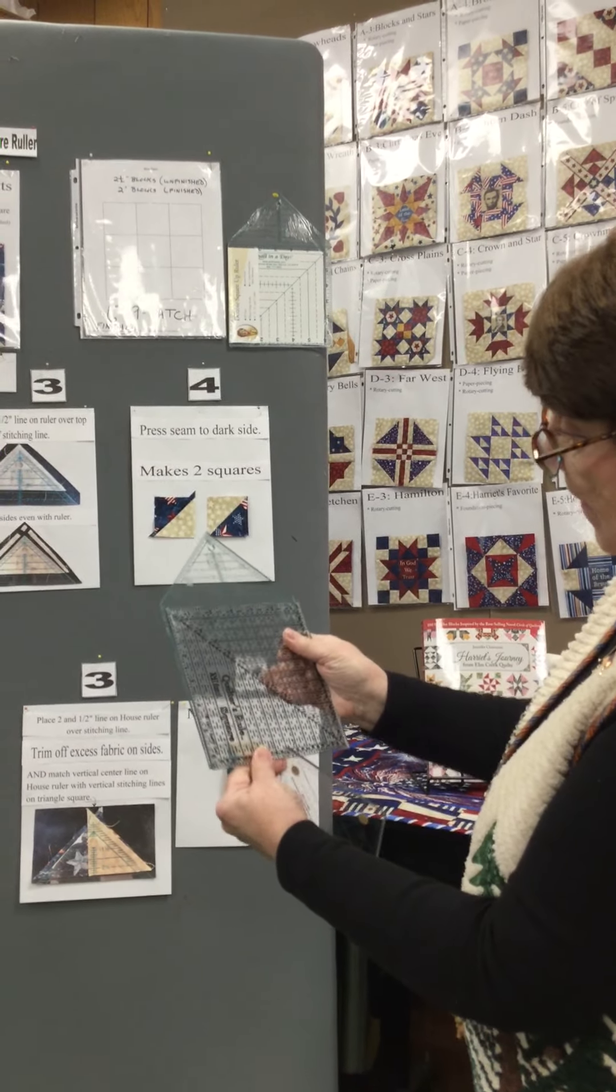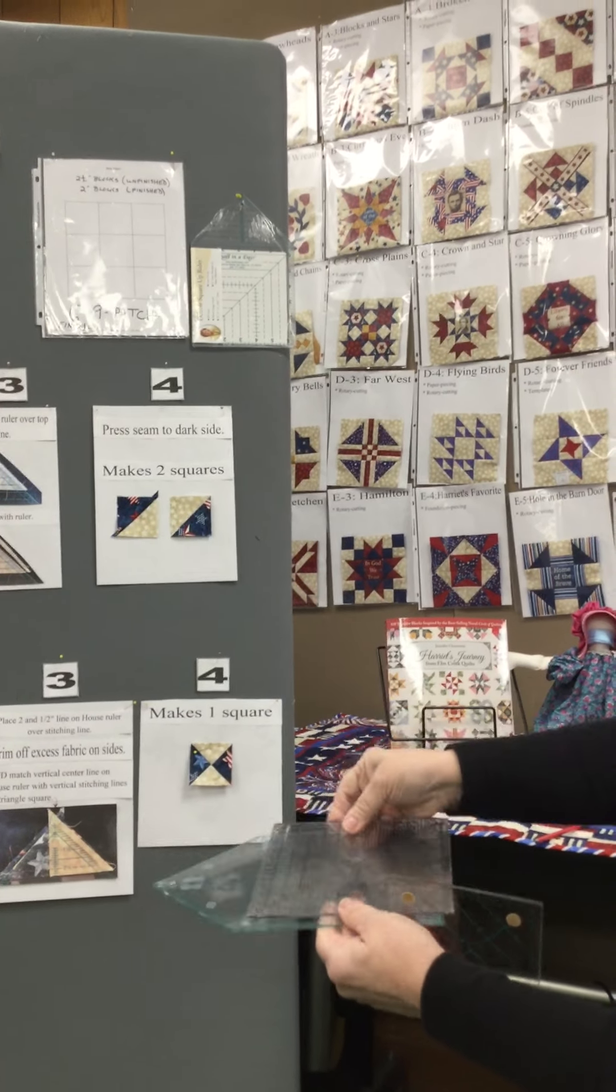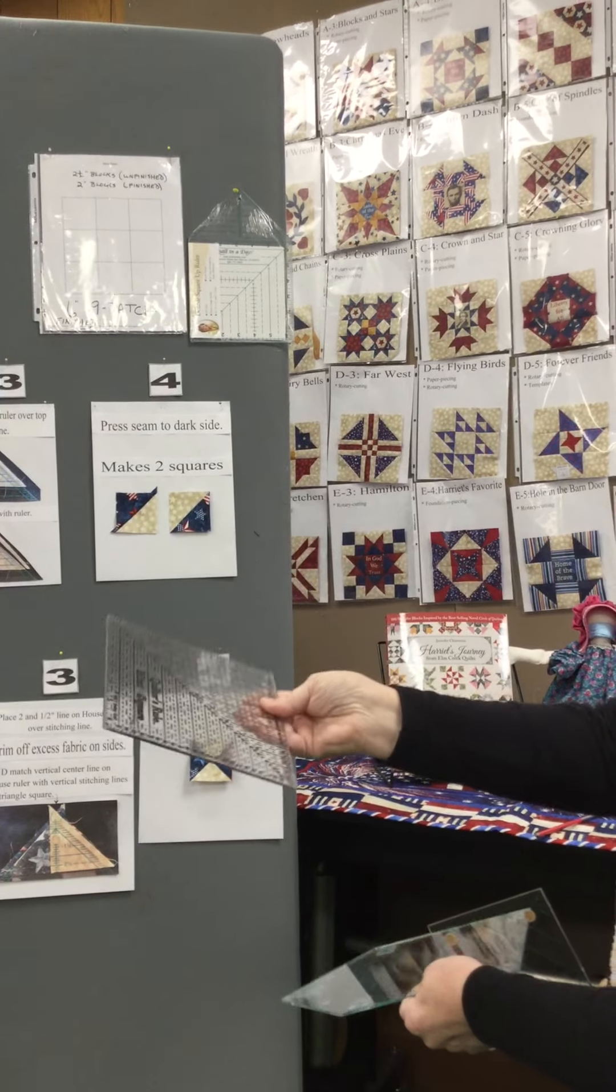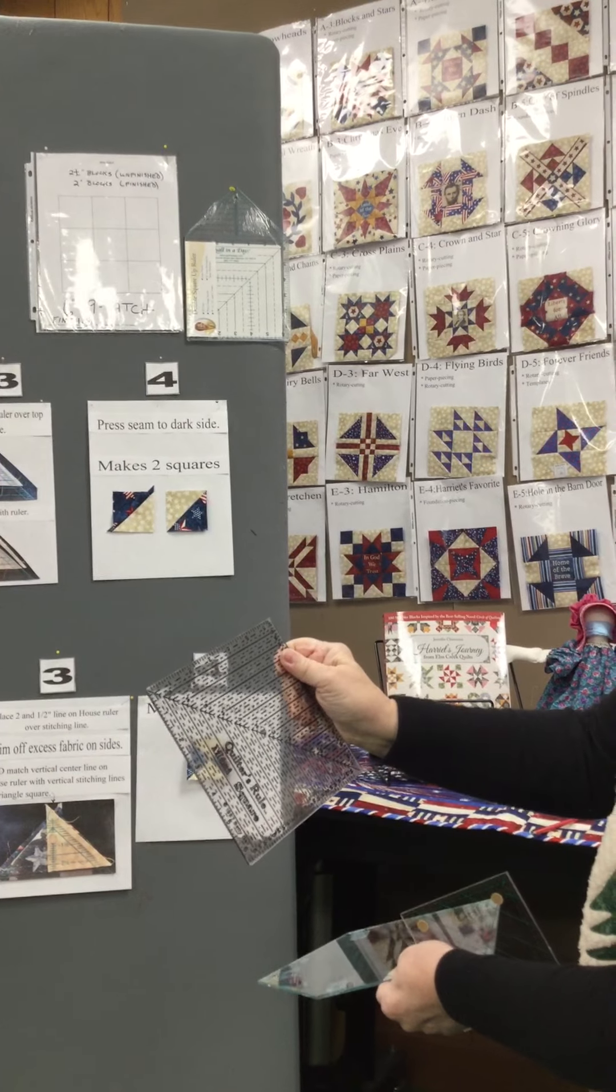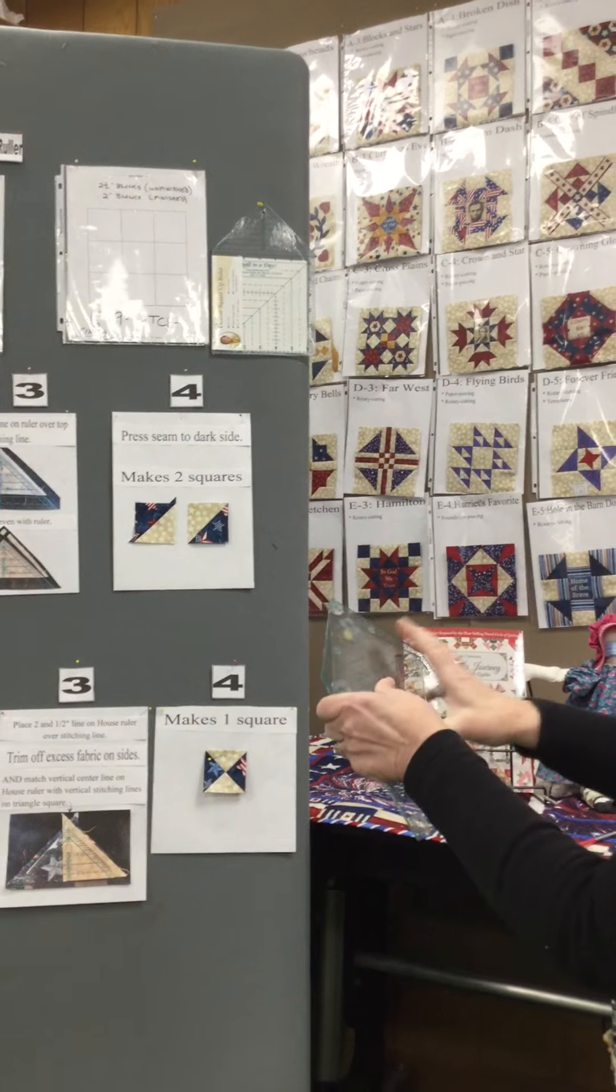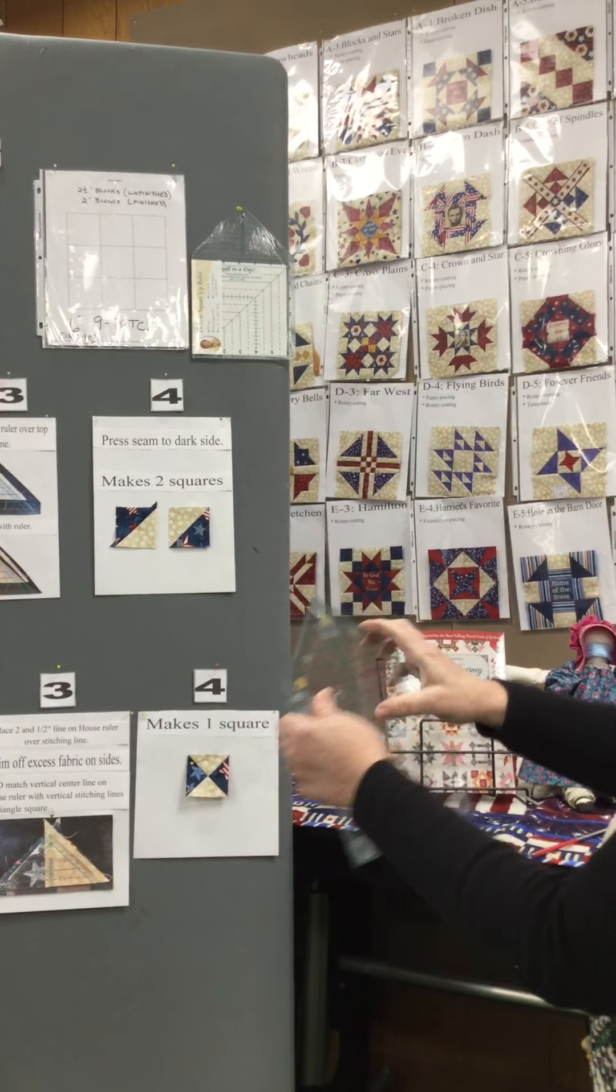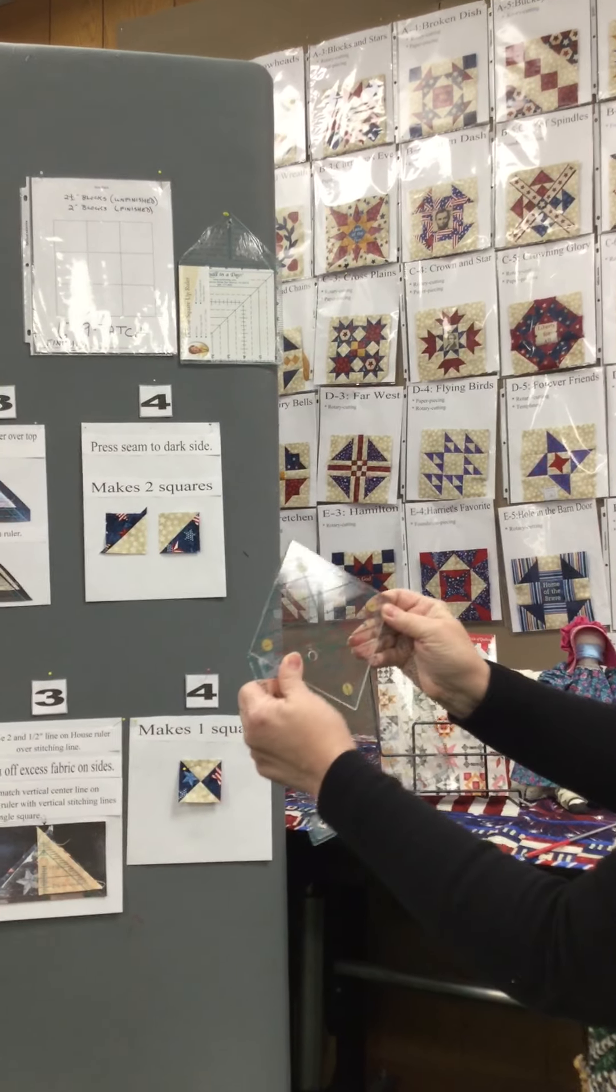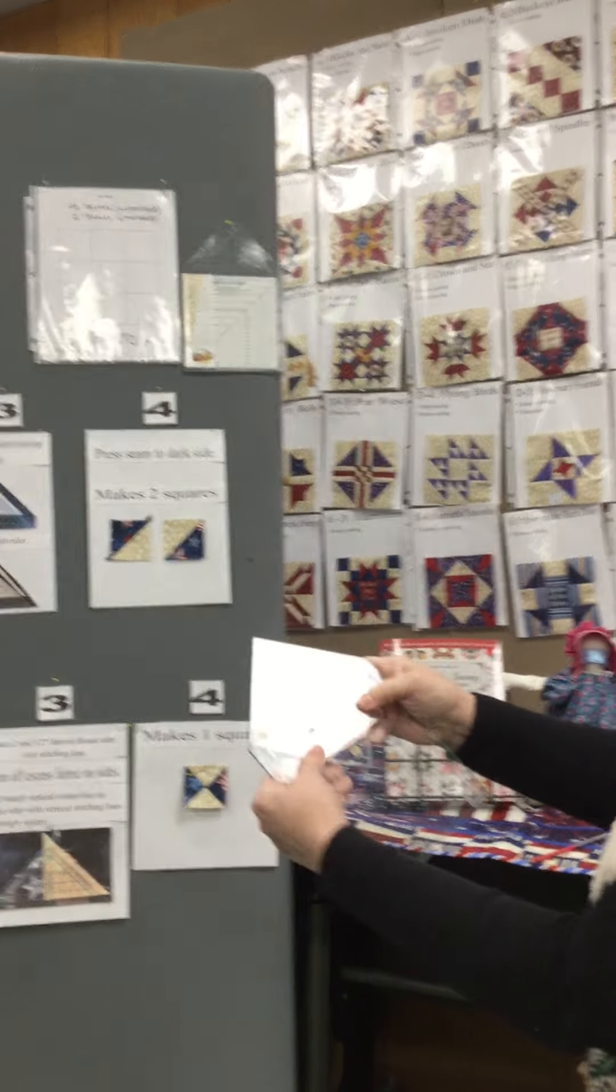The bottom half of the ruler is nothing more than a six and a half inch square up, which you can use to cut all sizes of squares up to six and a half inches. The top portion of it, however, is a triangle square up ruler, and it will square up any triangle up to four and a half inches square.